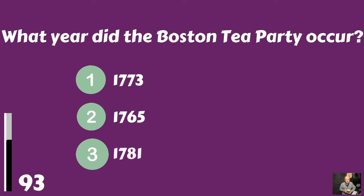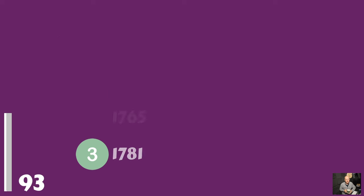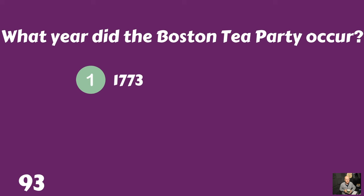What year did the Boston Tea Party occur? 1773, 1765, or 1781? The Boston Tea Party occurred in 1773.